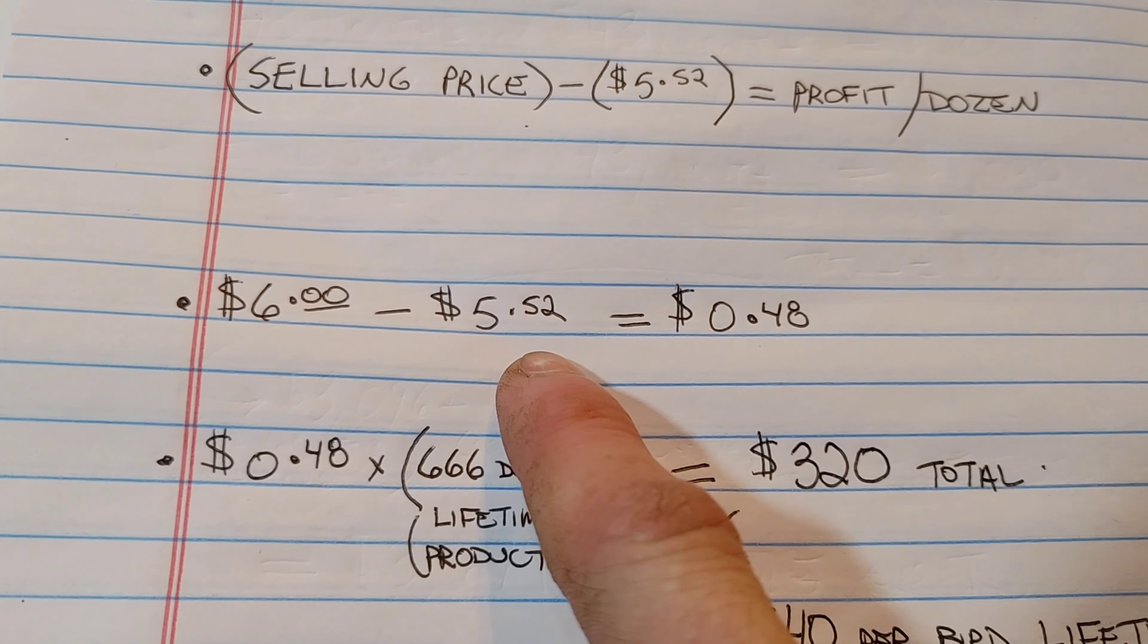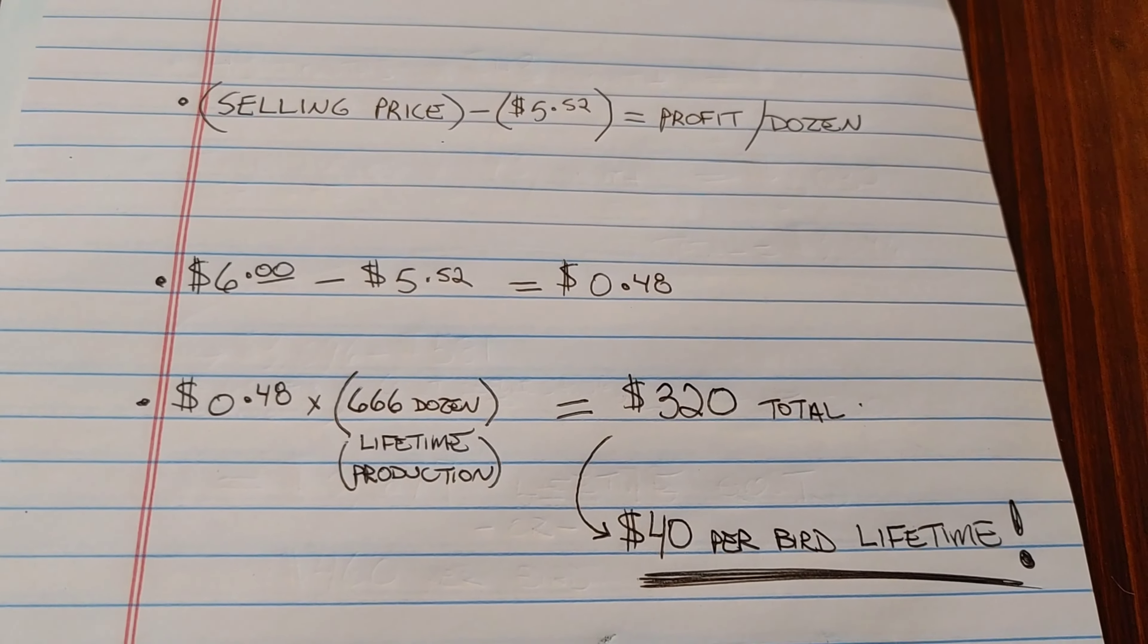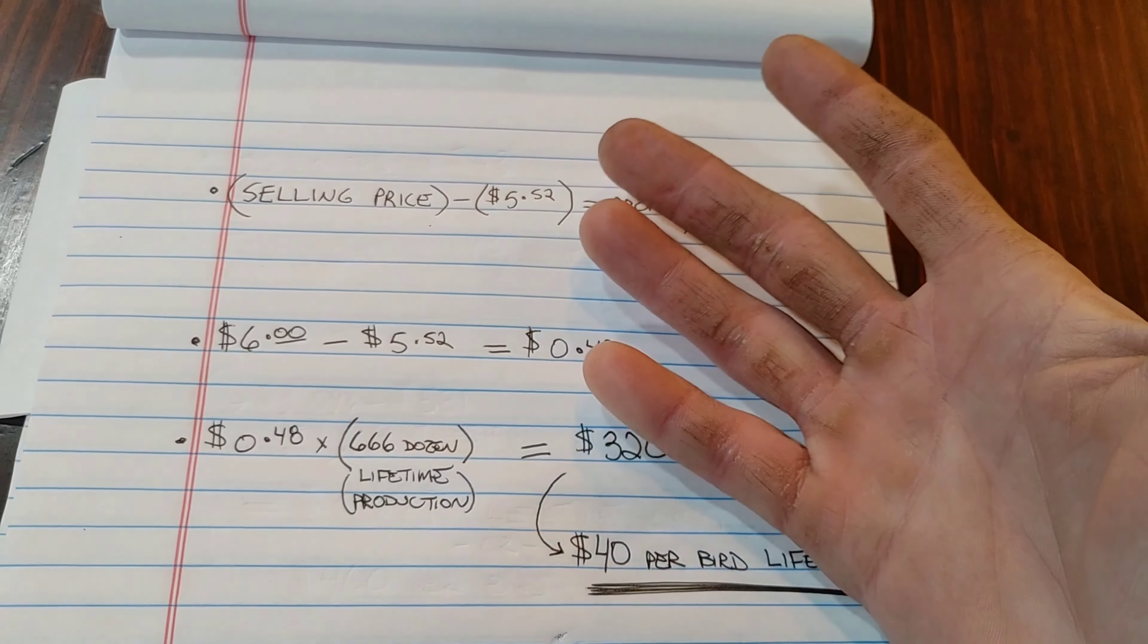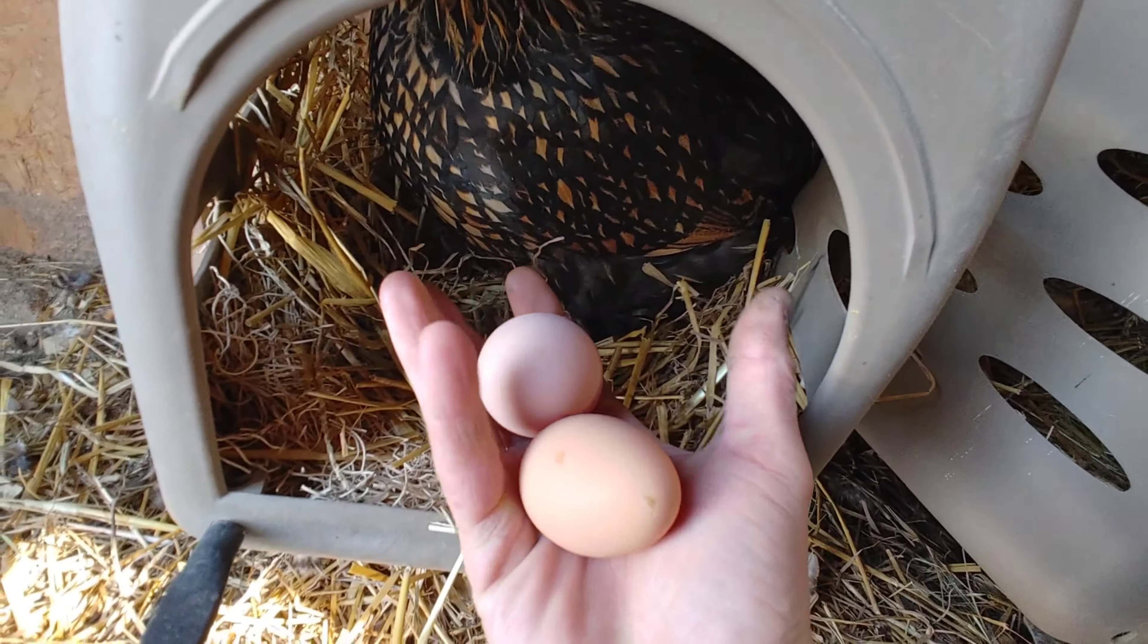We've got to factor in food, bedding, and grit. I've got a total of $43 a month for that. Divide 43 by 160, we're at 27 cents an egg, which comes out to about $3.23 a dozen, which doesn't seem too bad, but we're forgetting something.